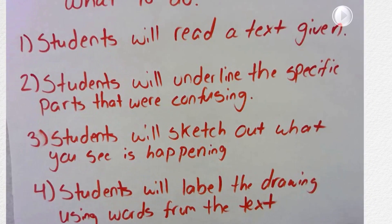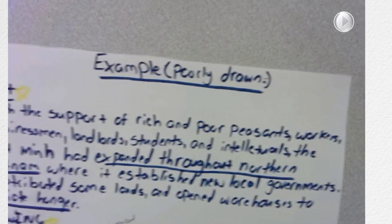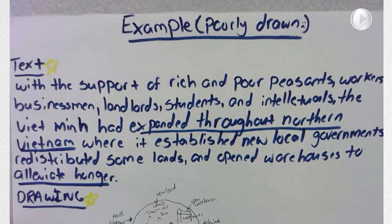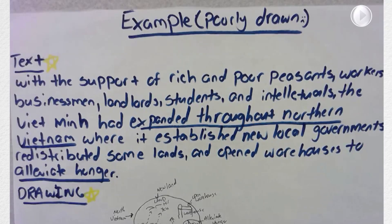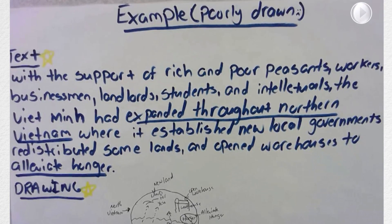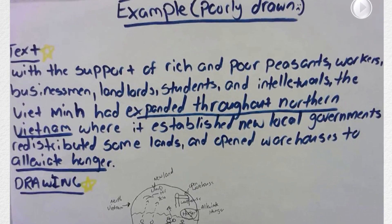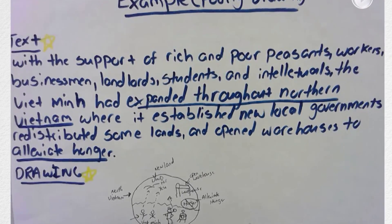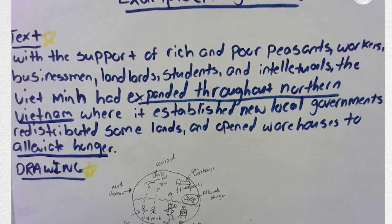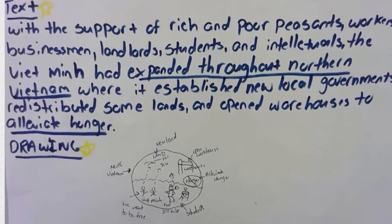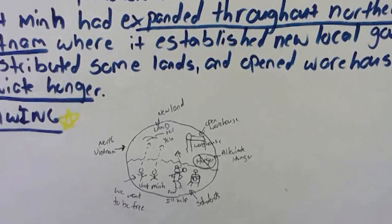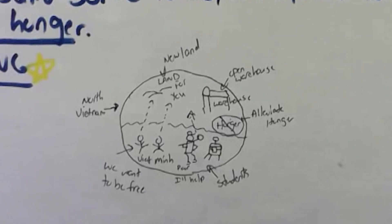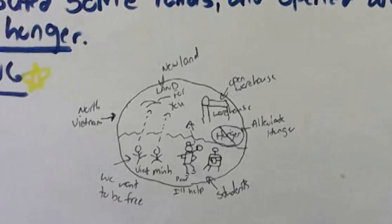Here are two examples — the first is from history. Here's the text: 'With the support of rich and poor peasants, workers, businessmen, landlords, students, and intellectuals, the Viet Minh had expanded throughout northern Vietnam, where it established new local governments, redistributed some lands, and opened warehouses to alleviate hunger.' The underlined parts are the parts that the student was confused about.